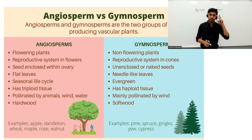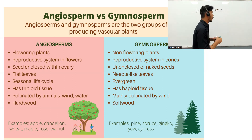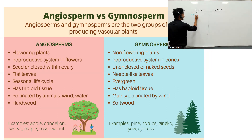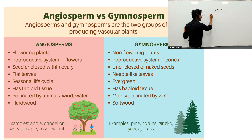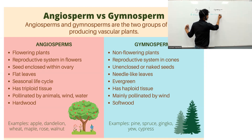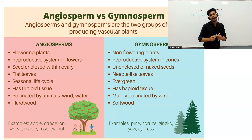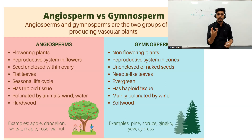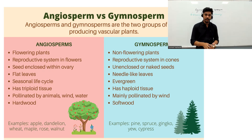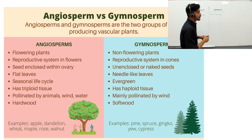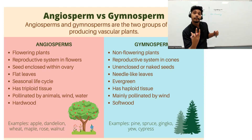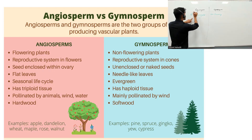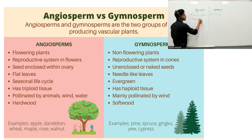The first point: angiosperms are flowering plants — flowers are present. Gymnosperms are non-flowering; they do not produce any flower. In angiosperms, the flower is actually the reproductive part of the plant, so reproduction is carried out in the flower.